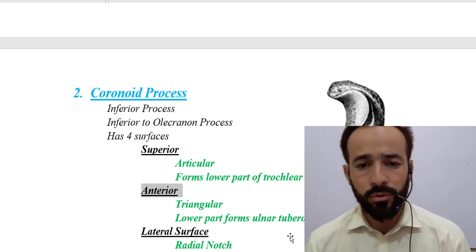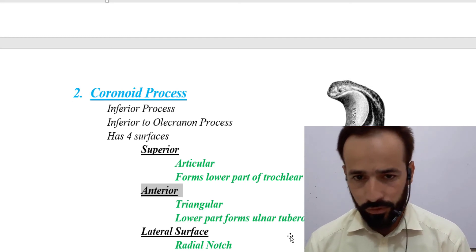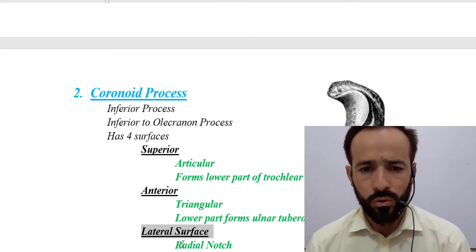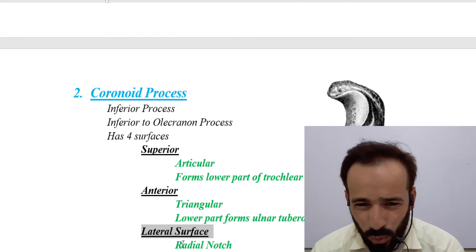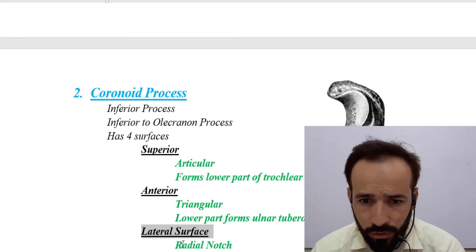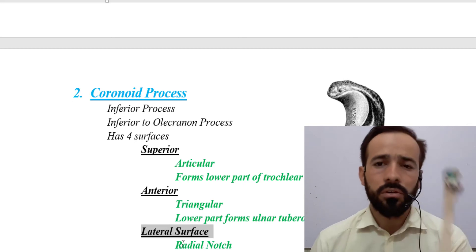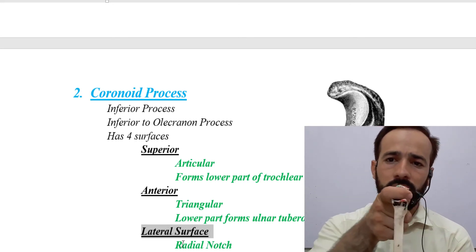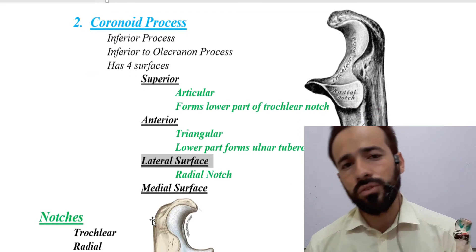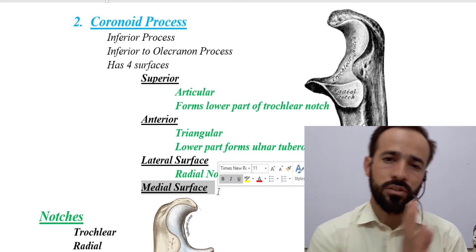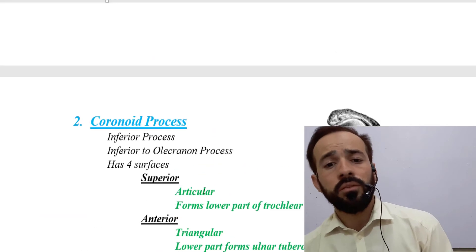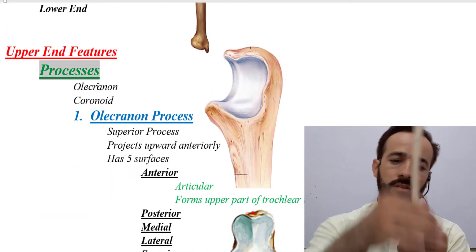The upper end has two processes — the olecranon process and the coronoid process — and two notches: the trochlear notch and the radial notch. The trochlear notch is placed anteriorly and the radial notch is laterally.